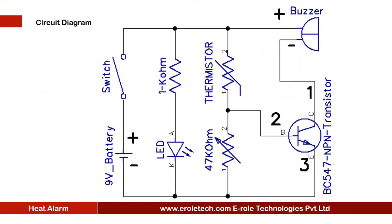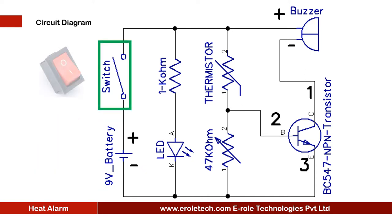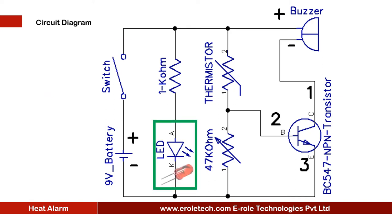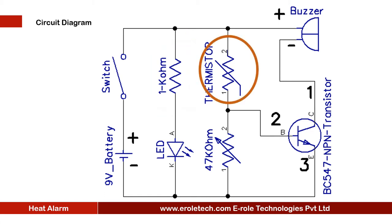Before making the project, we will understand its circuit diagram. This is a 9 volt battery to power the circuit. This is an on/off switch to start or stop the project. This is a power supply indication LED. This is a current limiting resistor to protect the LED from high current and voltage. This is the symbol of a thermistor — a type of resistor whose resistance changes with temperature.